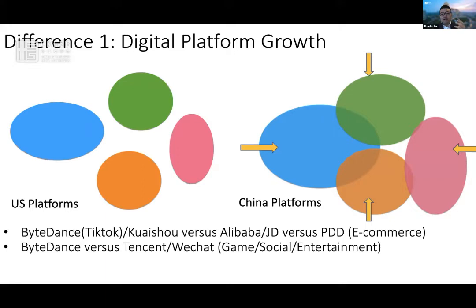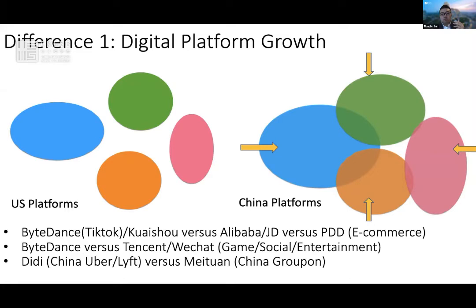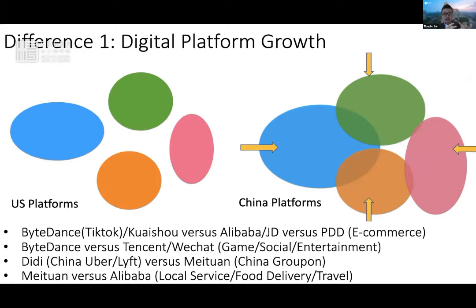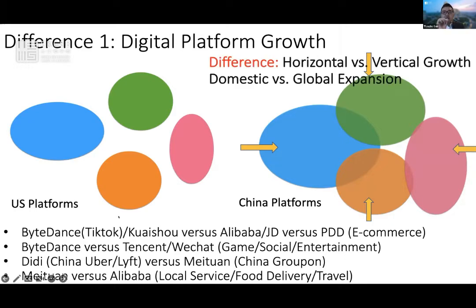Between Tencent and Alibaba, they compete on mobile payment and so on. DiDi versus Meituan — seemingly quite different platforms — compete on ride-sharing. And Meituan, like Groupon in China, competes heavily with Alibaba on local service, food delivery, and so on. So it's very interesting to see this key difference, which I summarize as the horizontal versus vertical growth mode. The Chinese digital platforms are growing more in a horizontal way, across sectors — from e-commerce to fintech to logistics to local service. But US firms grow in a more specialized way. Facebook is expanding globally, but focused on social networking through Facebook, Instagram, WhatsApp, and then Meta with VR and Oculus.